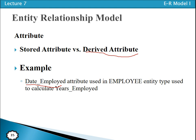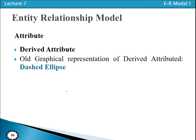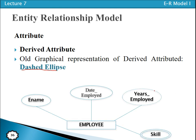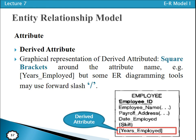Now we have identifier and partial identifier. To uniquely identify the record of a strong entity type, we use an identifier. To represent the identifier, we use an underline. A partial identifier is used to uniquely identify a weak entity type — for that we use a double underline. For example, student ID and flight number are identifier attributes. Dependent ID is considered a partial identifier, represented with double underlines.